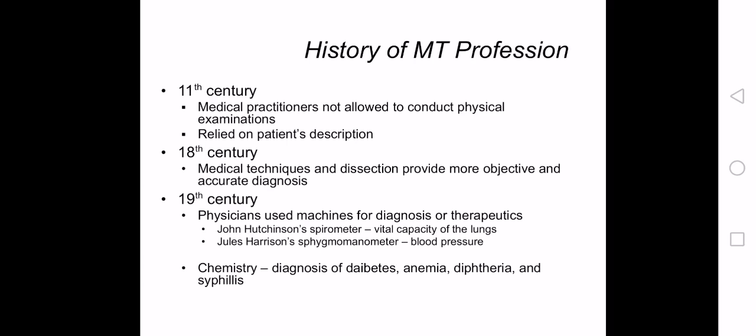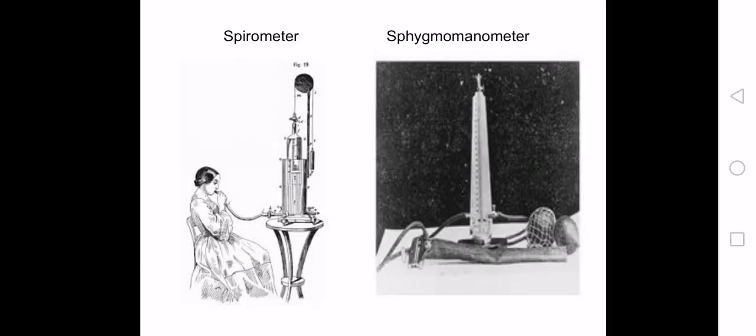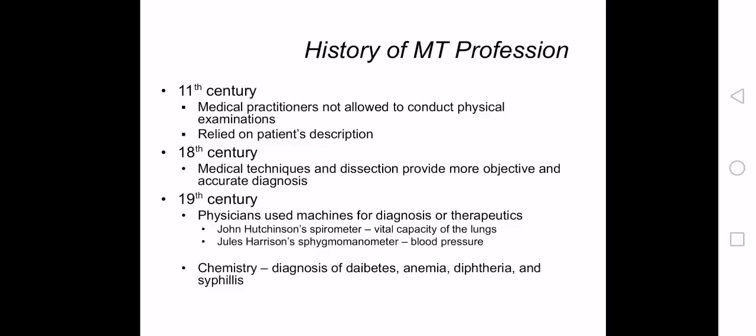Among these devices was John Hutchinson's spirometer for measuring the vital capacity of the lungs, and Jules Harrison's sphygmomanometer for measuring blood pressure. Also, the use of chemistry was pivotal in the diagnosis of diabetes, anemia, diphtheria, and syphilis during this period.